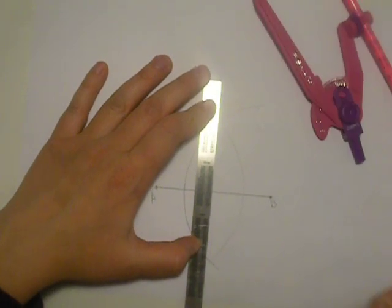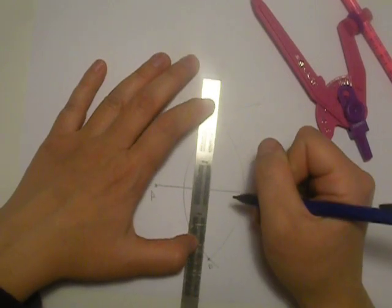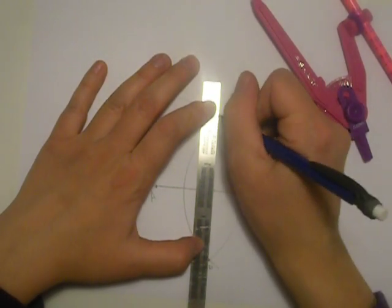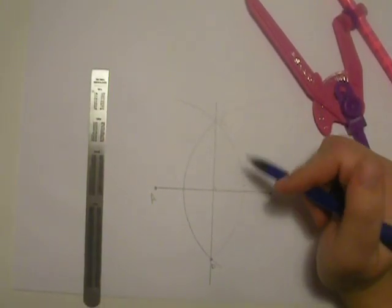And we're going to connect these two points, C and D. Now we have a perpendicular bisector.